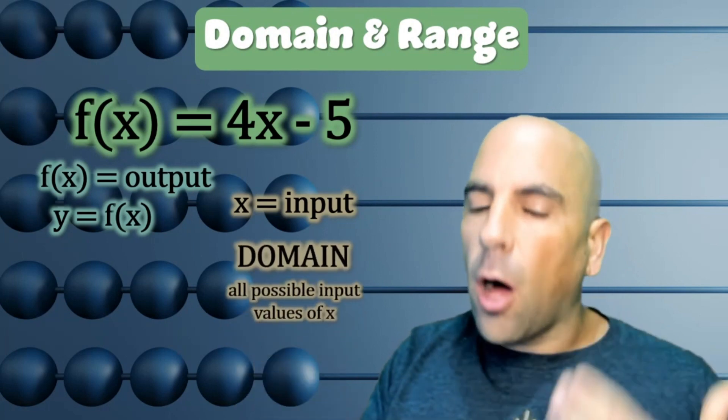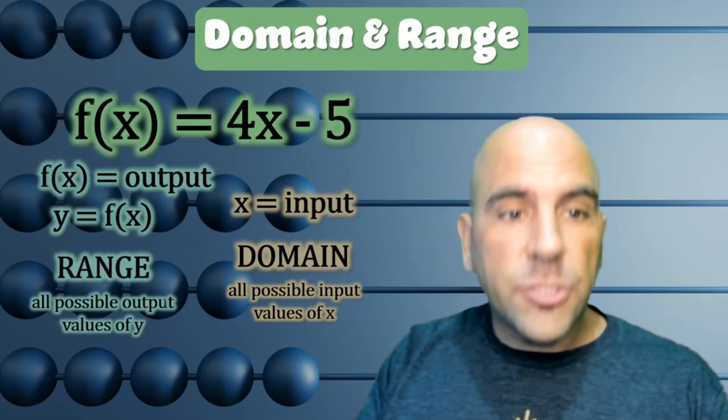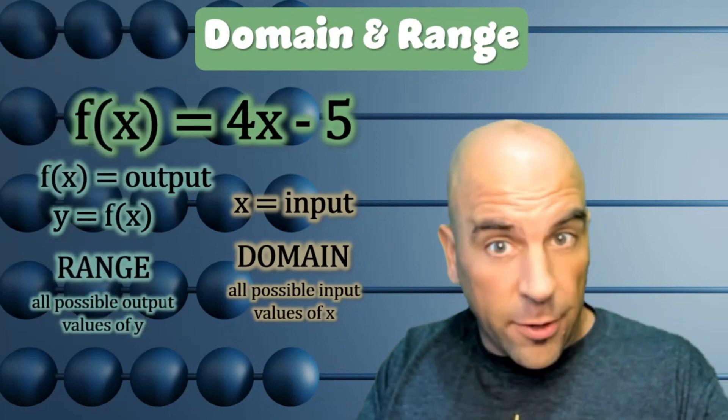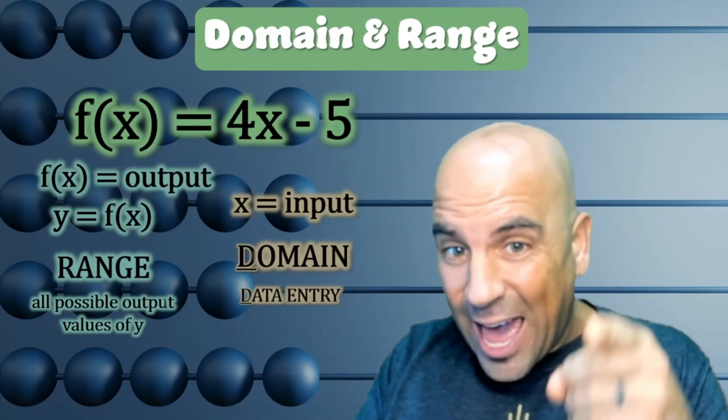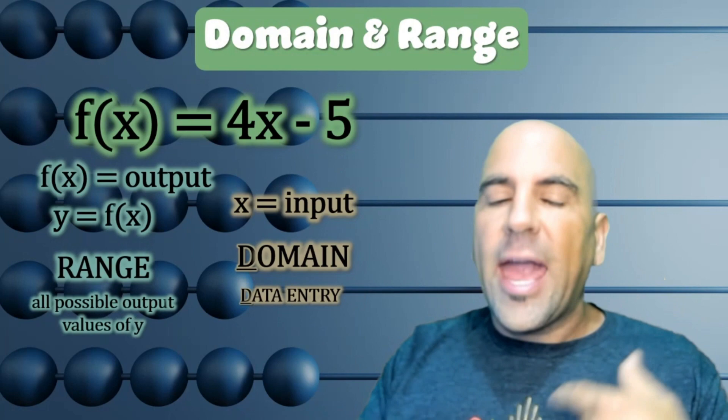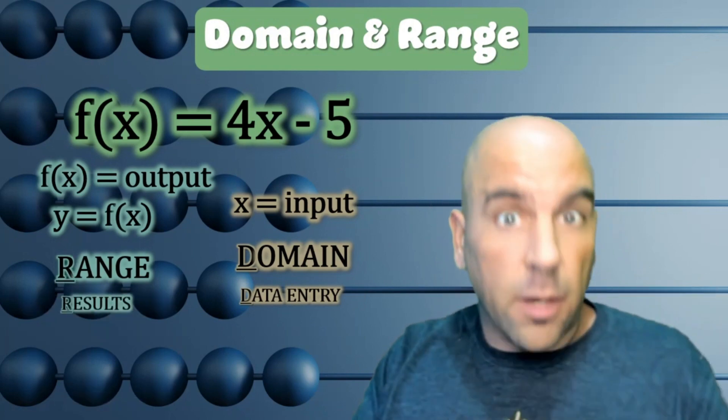The domain is all possible input values of x, while the range is all possible output values of y. A way that I've remembered this in the past is that the domain is like data entry, what goes in, and the range is the result. It's helped me over the years, maybe it'll help you remember it.